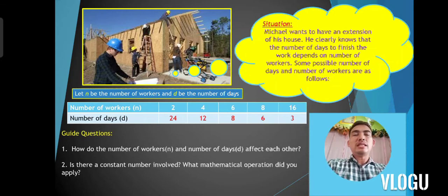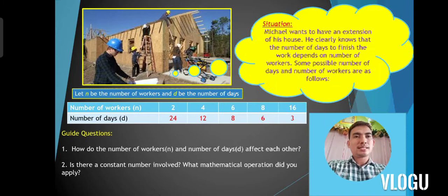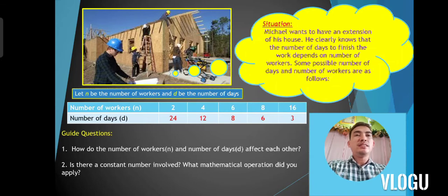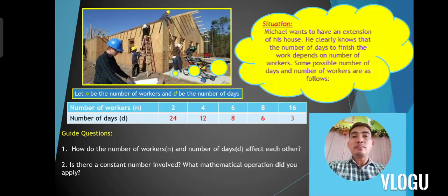Is there a constant number involved? What mathematical operation did you apply? When you multiply 2 and 24, you get 48. 4 and 12 also give 48. 6 and 8, 8 and 6, 16 and 3 — that is the constant number, which is 48. The mathematical sentence or equation describing the relation is N is equal to 48 over D, or the number of workers is equal to 48 divided by the number of days.